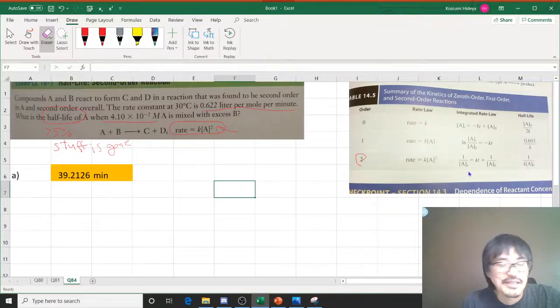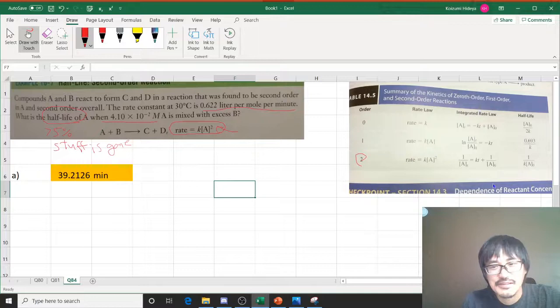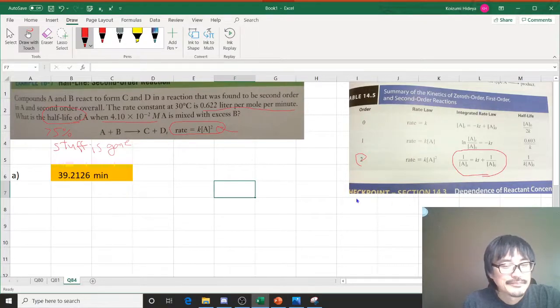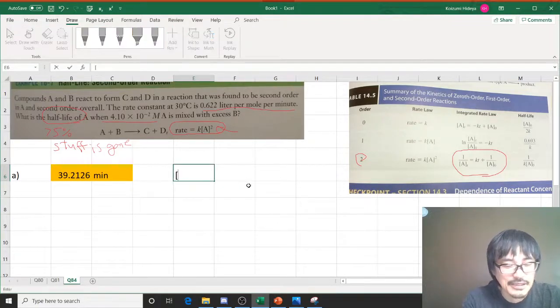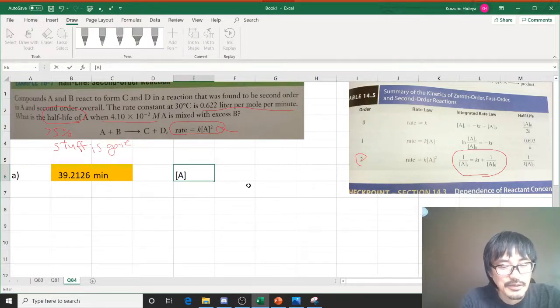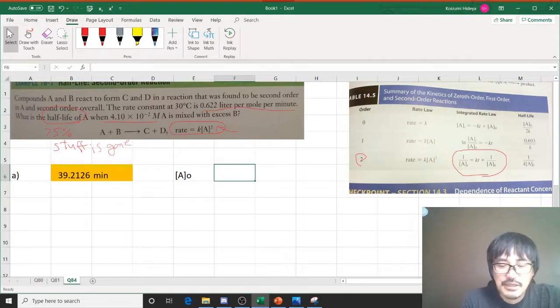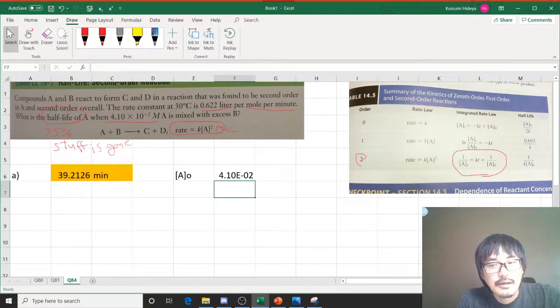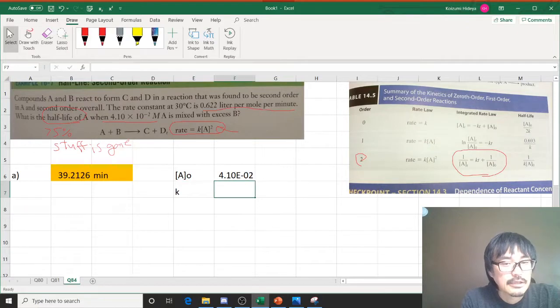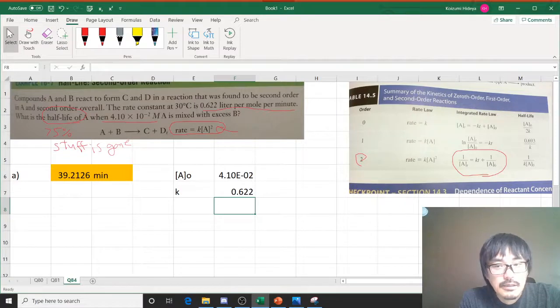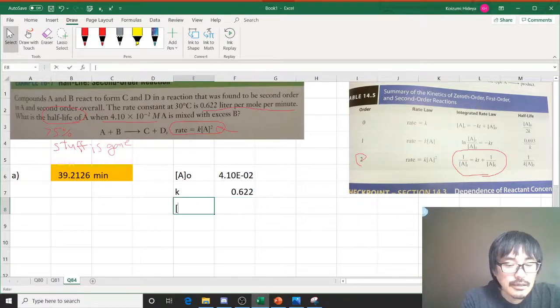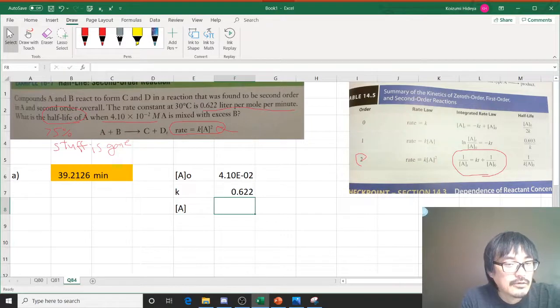Looking for what is the time, and for that particular case you're going to use this formula here. So what is the concentration of A at currently? What's given in this particular problem? This is a new problem. Okay, new problem: originally we started out with 4.1 times 10^-2, and then rate constant is given by 0.622. And that's about it. Then I can actually figure out the current concentration of A.